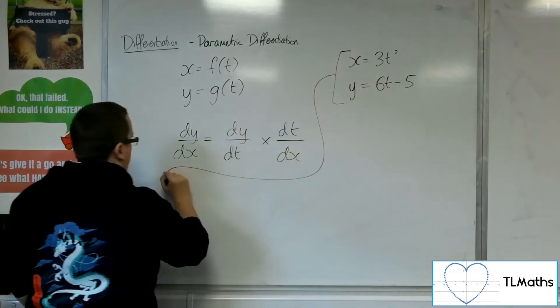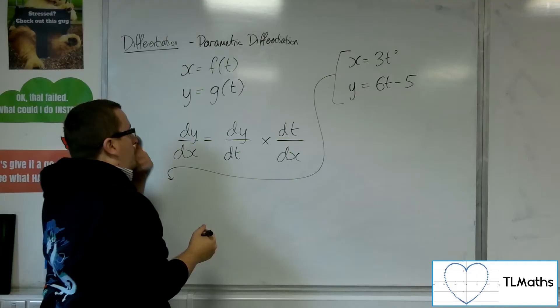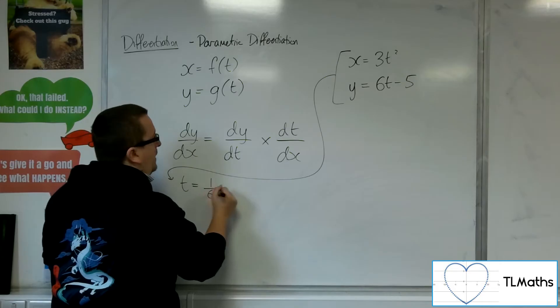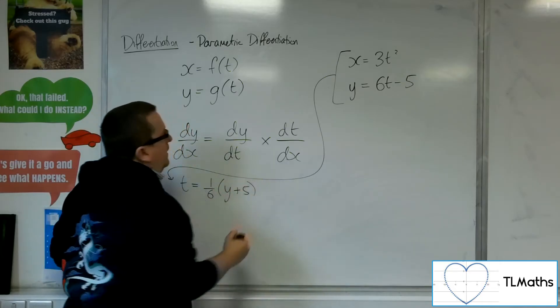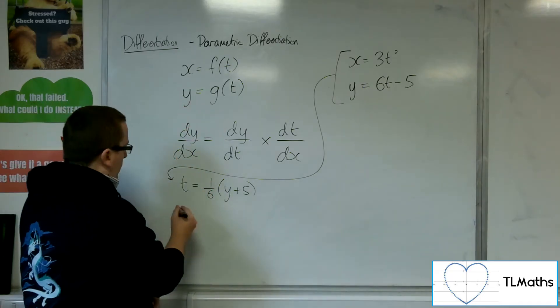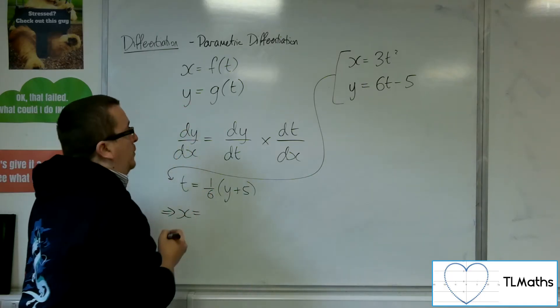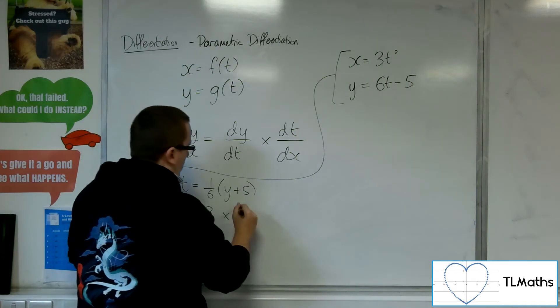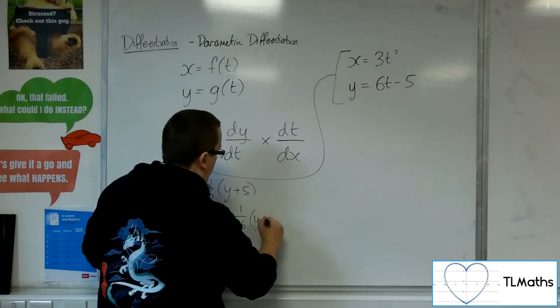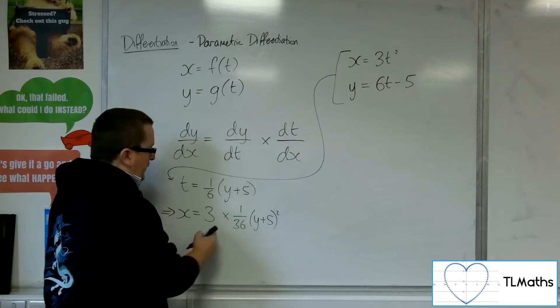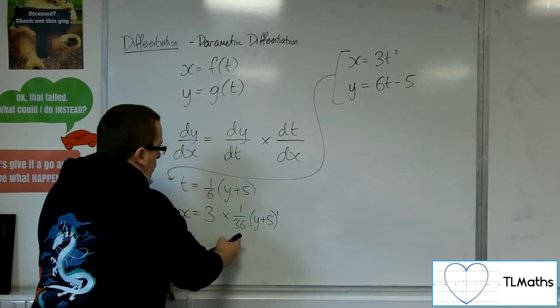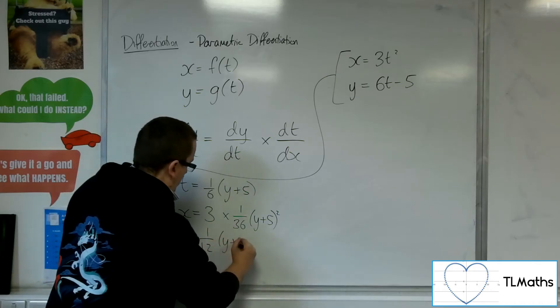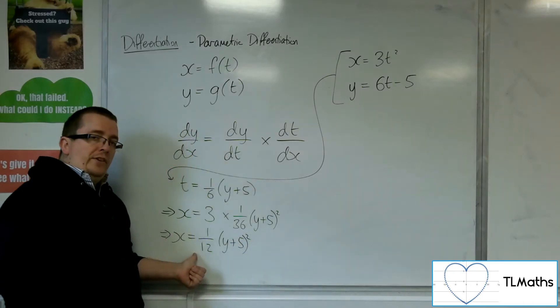OK. So what I'm going to do is we're going to go down here and I'm going to rearrange that second equation to get t equals and it'll be 1 6th of y plus 5. And then I would substitute that into the first equation. So x is equal to 3 lots of this squared. So 1 over 36, y plus 5 squared. So 3 over 36 is 1 over 12. So there is the Cartesian equation.